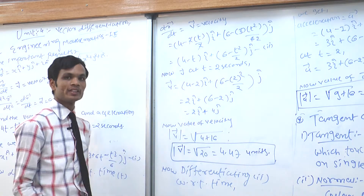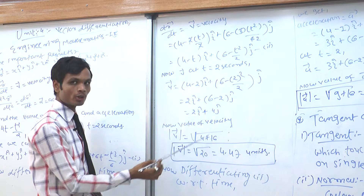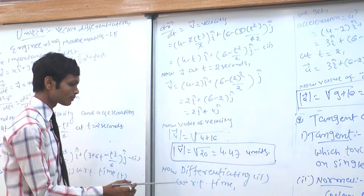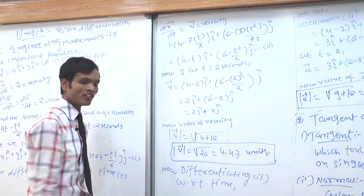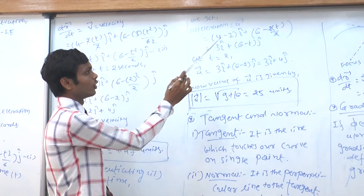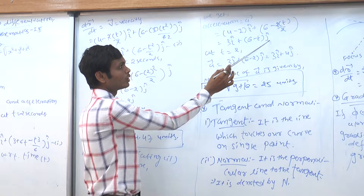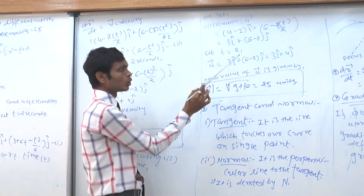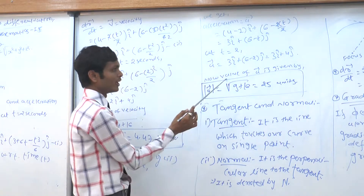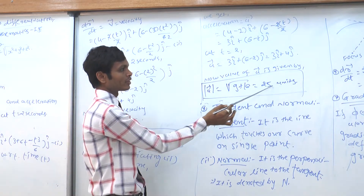The magnitude of velocity: |v| = √(2² + 4²) = √(4 + 16) = √20 = 4.47 units. Now differentiating the velocity equation again, we get acceleration: a = −i + (6 − 2t)j. At t = 2: a = −i + (6 − 4)j = −i + 2j... giving magnitude |a| = √(9 + 16) = √25 = 5 units.